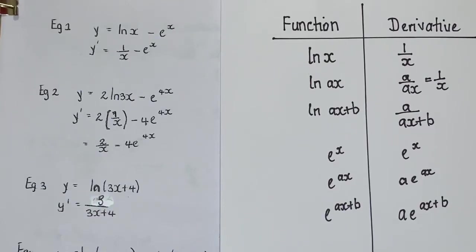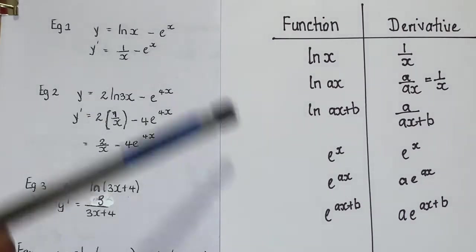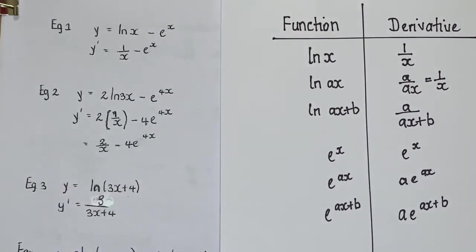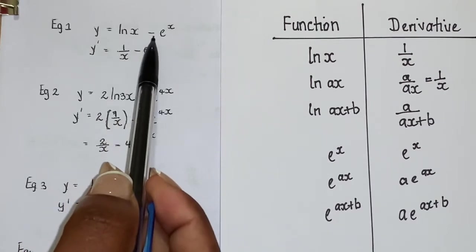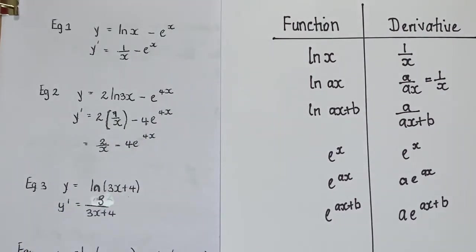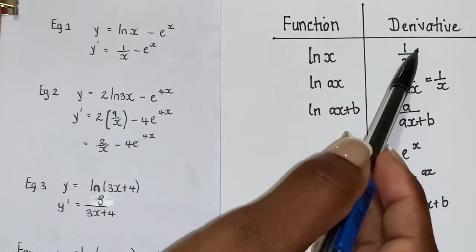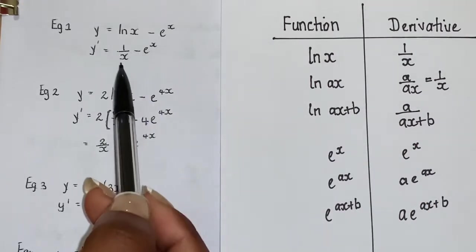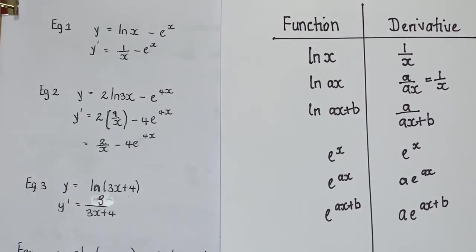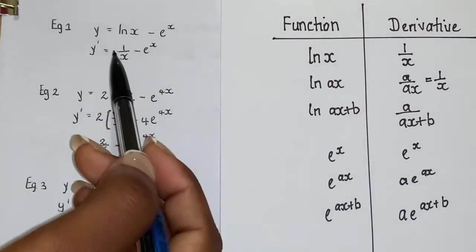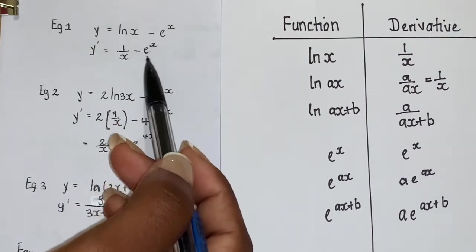Now let's look at a few examples — I've attached the table to the side for quicker reference. Example 1: y = ln(x) − e to the x. For ln(x), the derivative is 1 over x, and for e to the x, the derivative is still e to the x. So our answer is 1 over x minus e to the x.